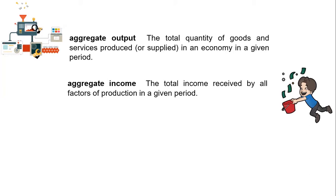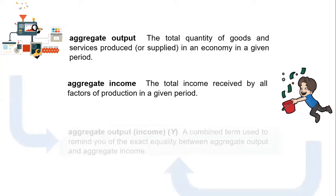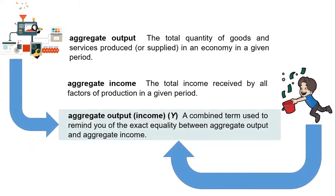We have to know that aggregate output is equal to aggregate income. Why? Because all my production, its objective is to get the income. So this is why we have the term aggregate output income Y, which is a combined term used to remind you of the exact equality between aggregate output and aggregate income.